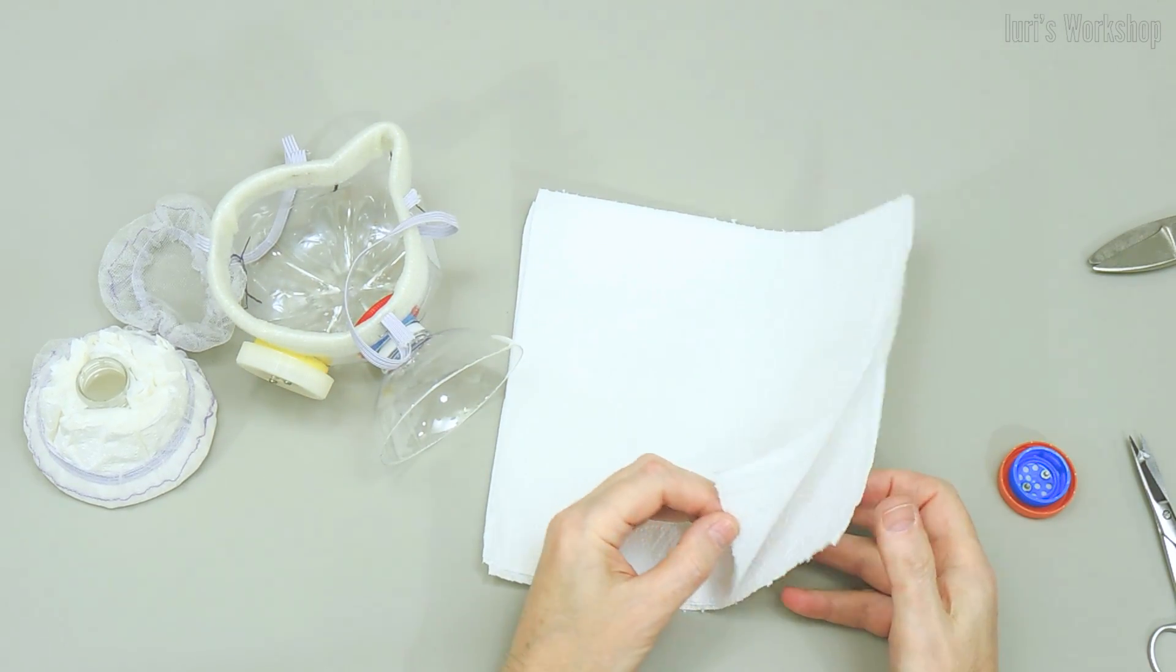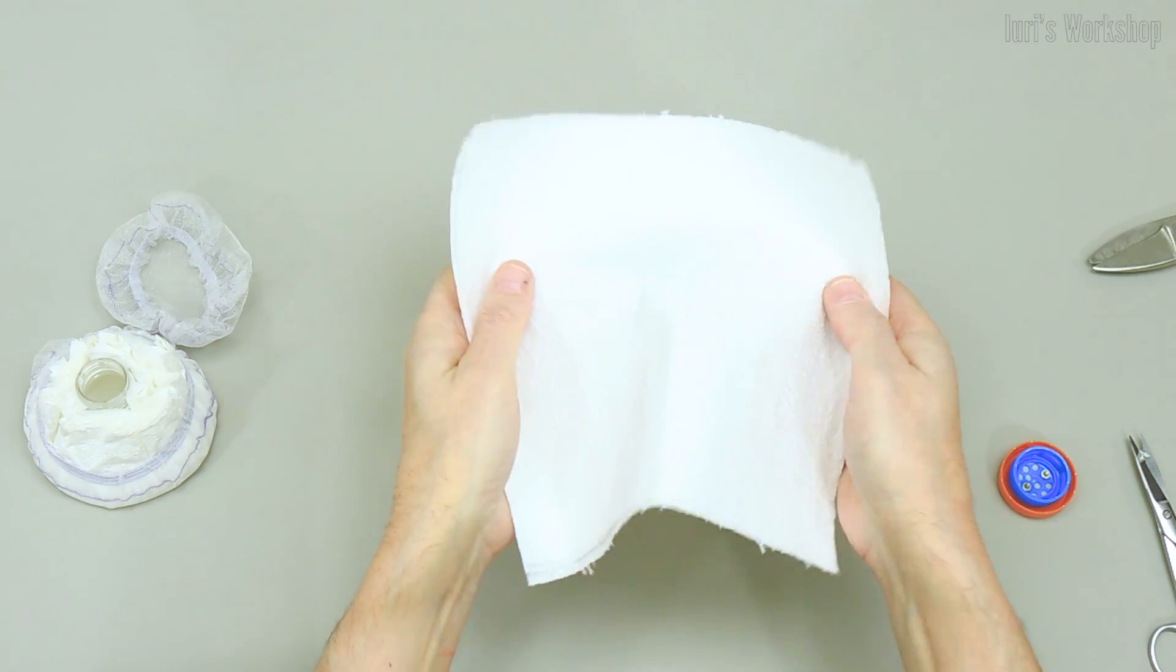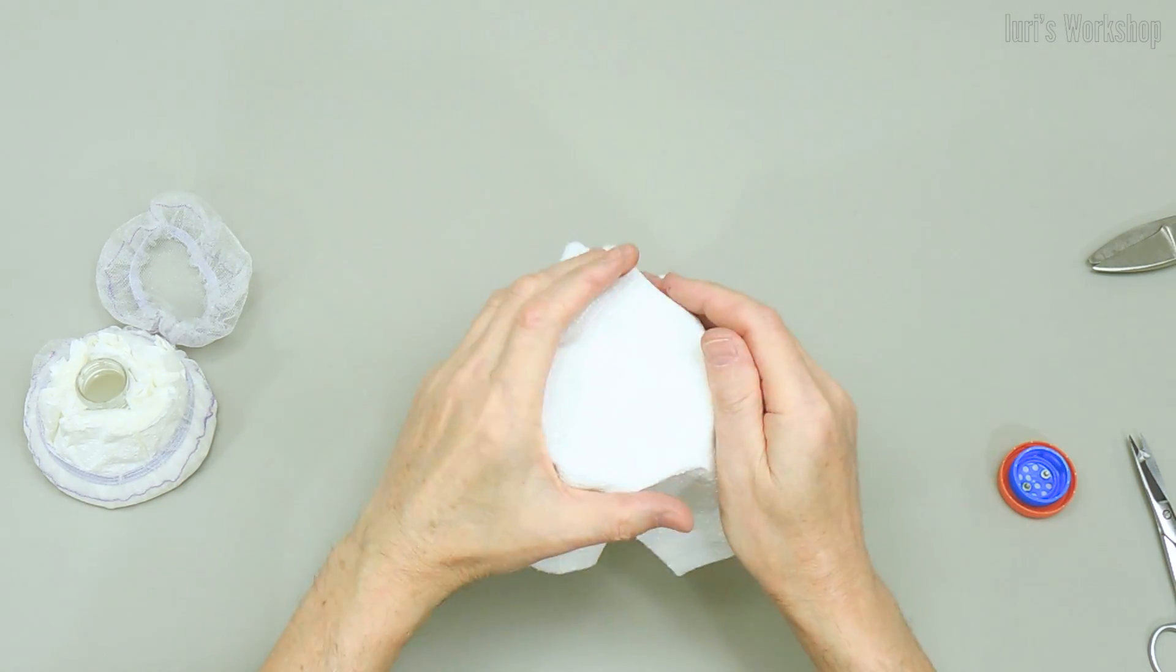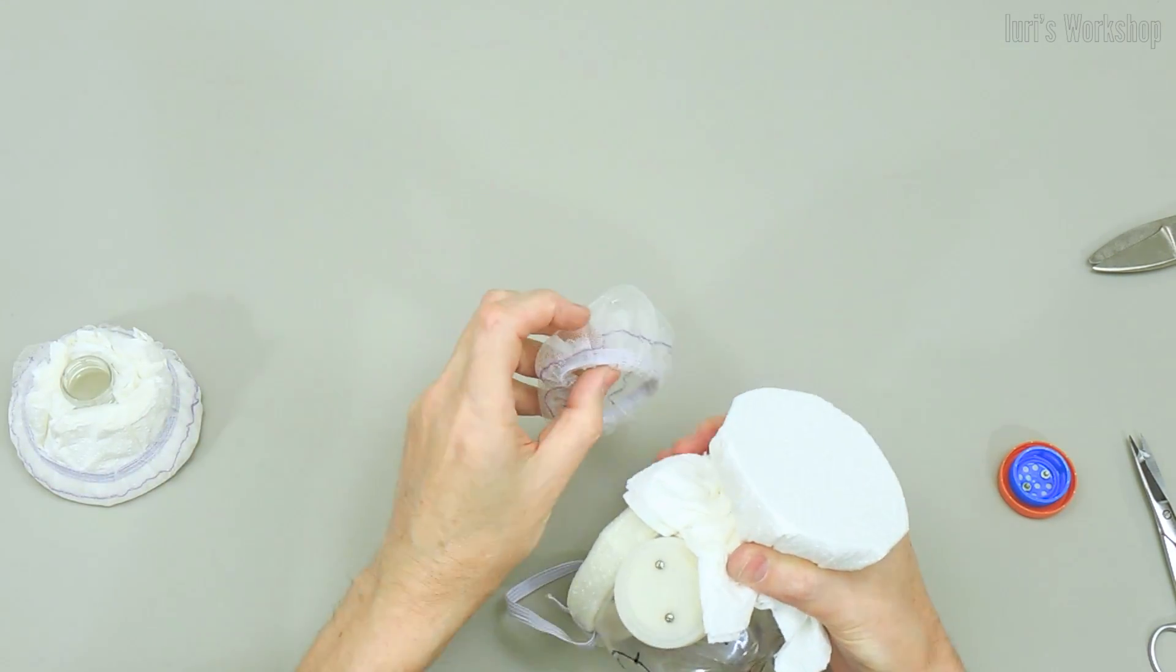Filters are made of disposable two-layer paper towels designed for the kitchen. You can use two to three wipes for each filter, depending on paper weight.